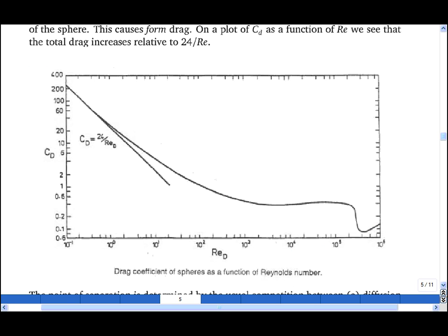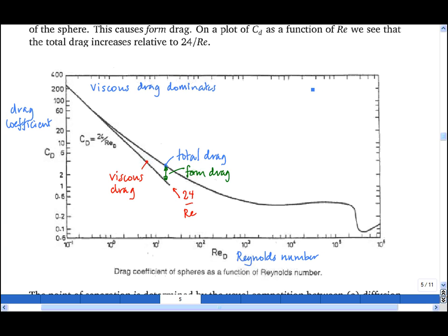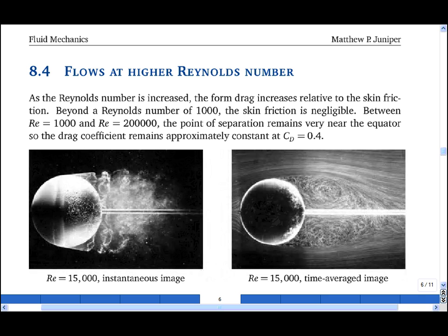And if we plot the drag coefficient as a function of the Reynolds number for the flow around a sphere, and if we plot the line 24 divided by the Reynolds number, which is the contribution of viscous drag, then we see that the total drag is greater than 24/Re, and the difference between the two is the contribution of the form drag. And note that the vertical axis is a log axis. On the left we see therefore that viscous drag dominates at low Reynolds number, while at higher Reynolds number we see that form drag dominates because the viscous drag becomes very small.